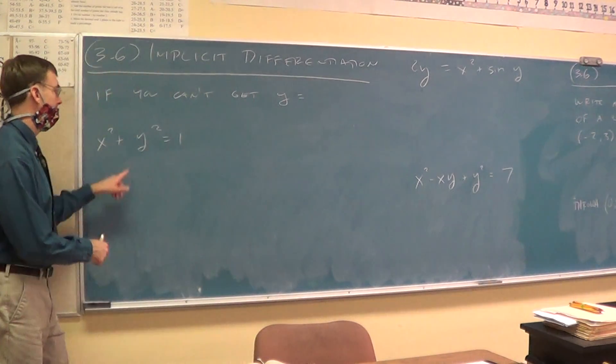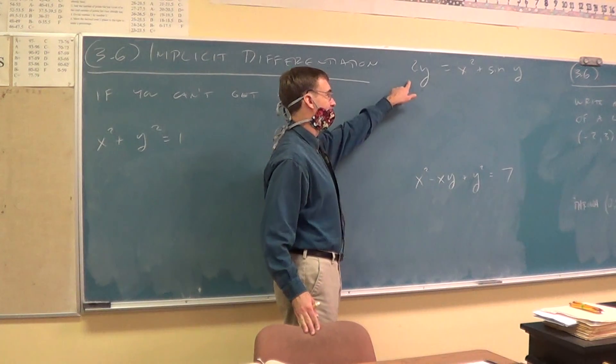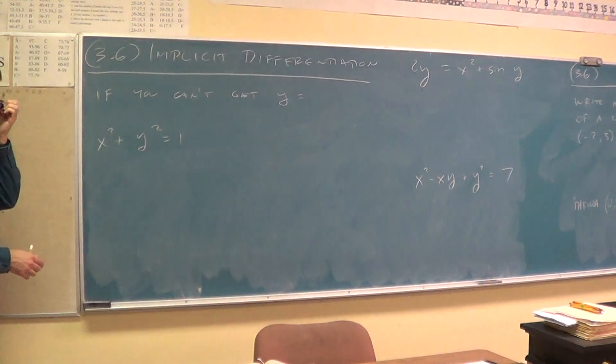So, when you can't get to y alone easily, there's a thing called implicit differentiation. So, you're going to do the derivatives as usual.